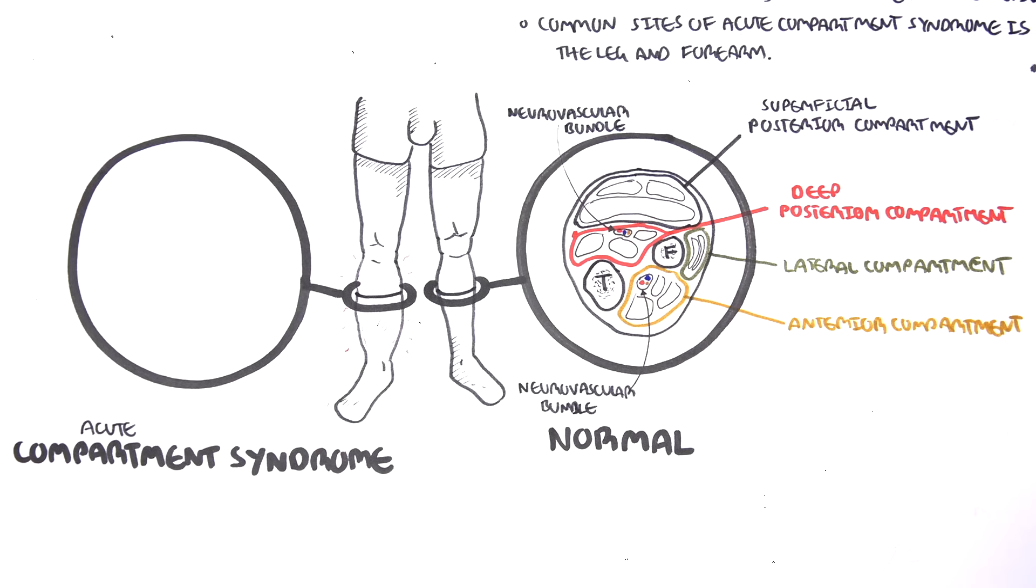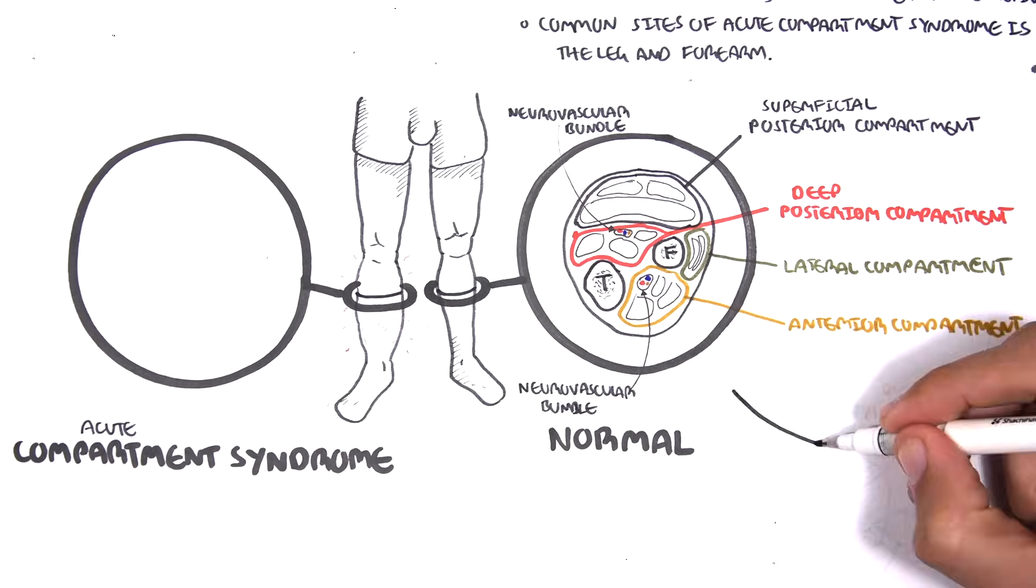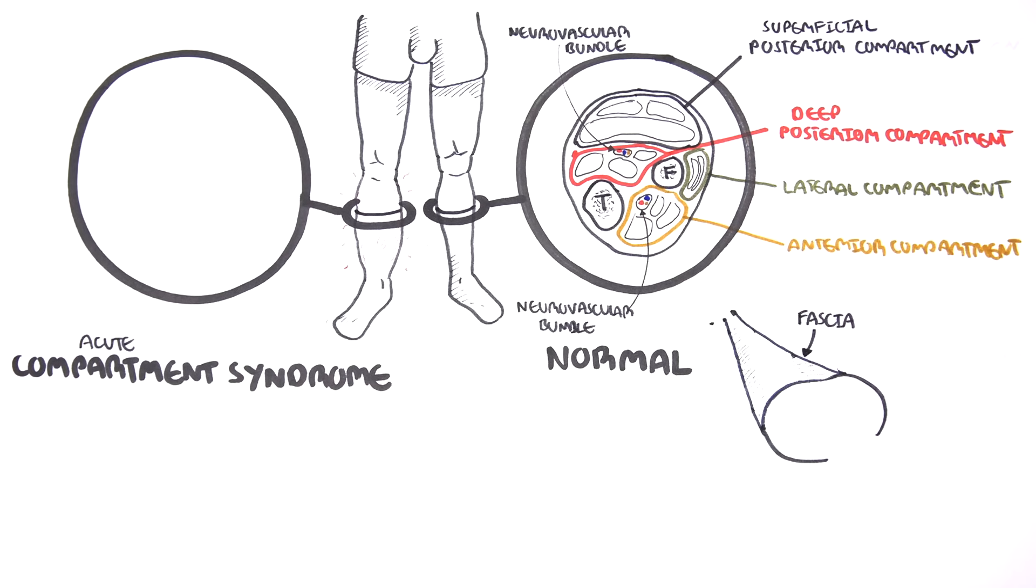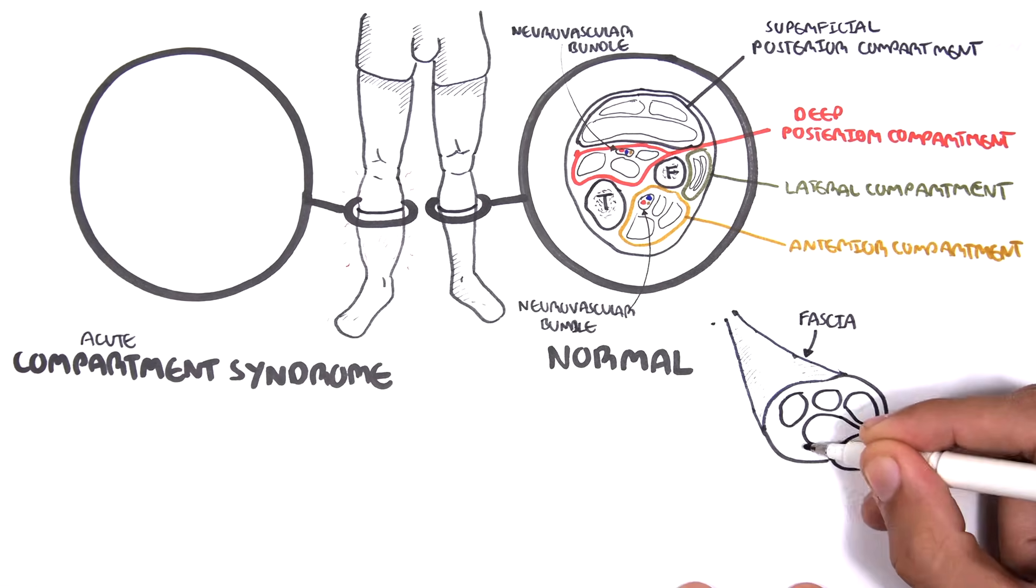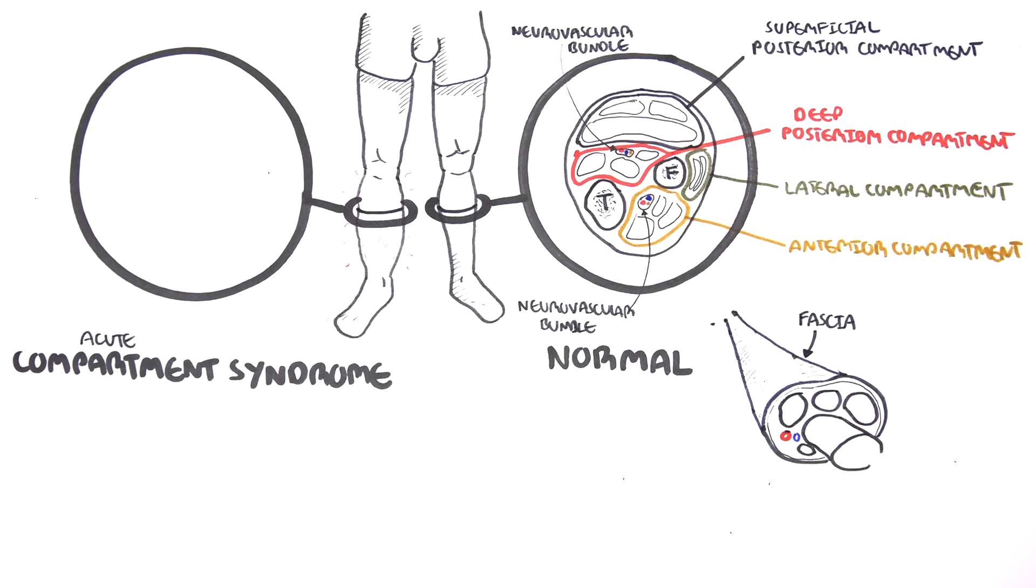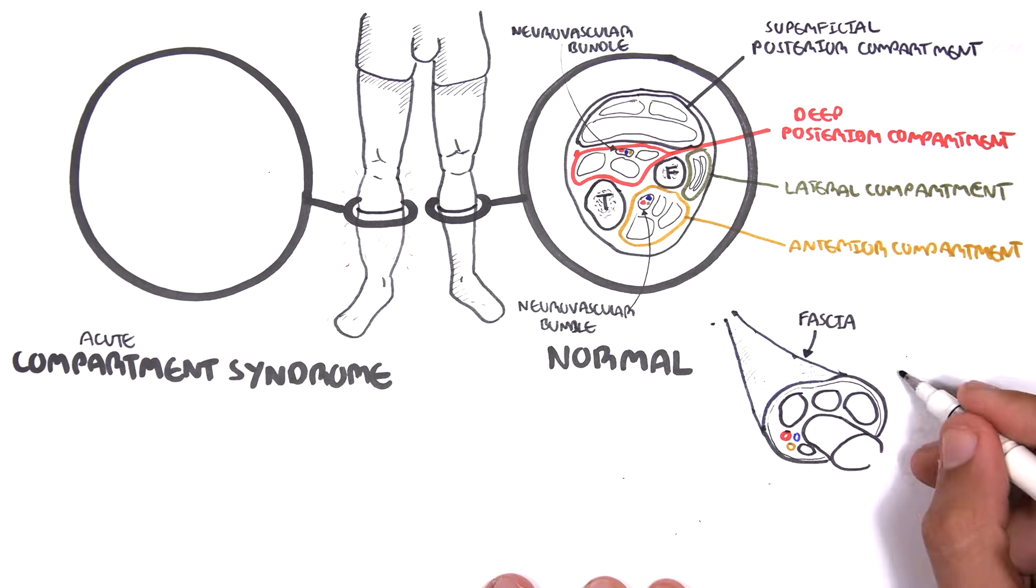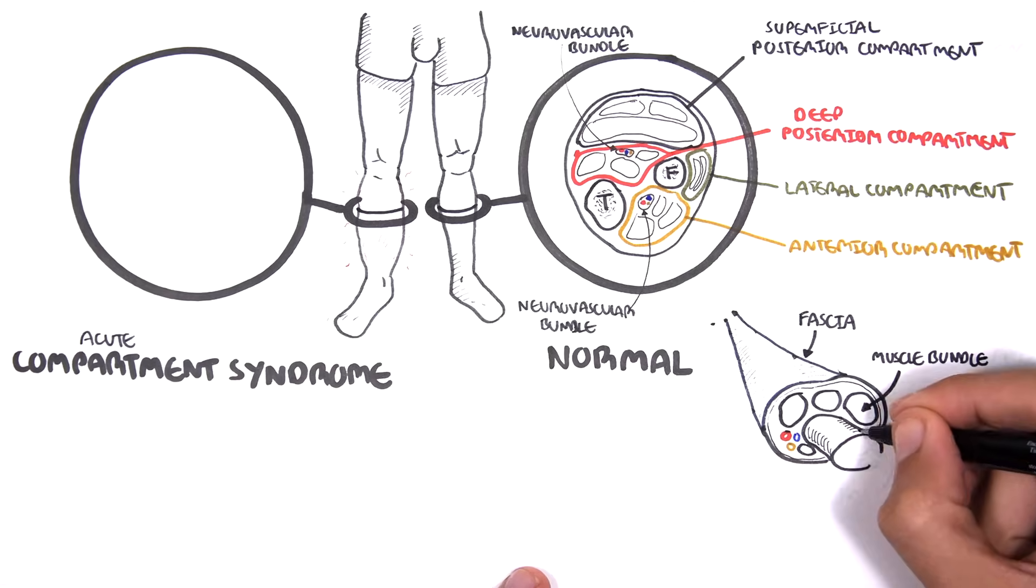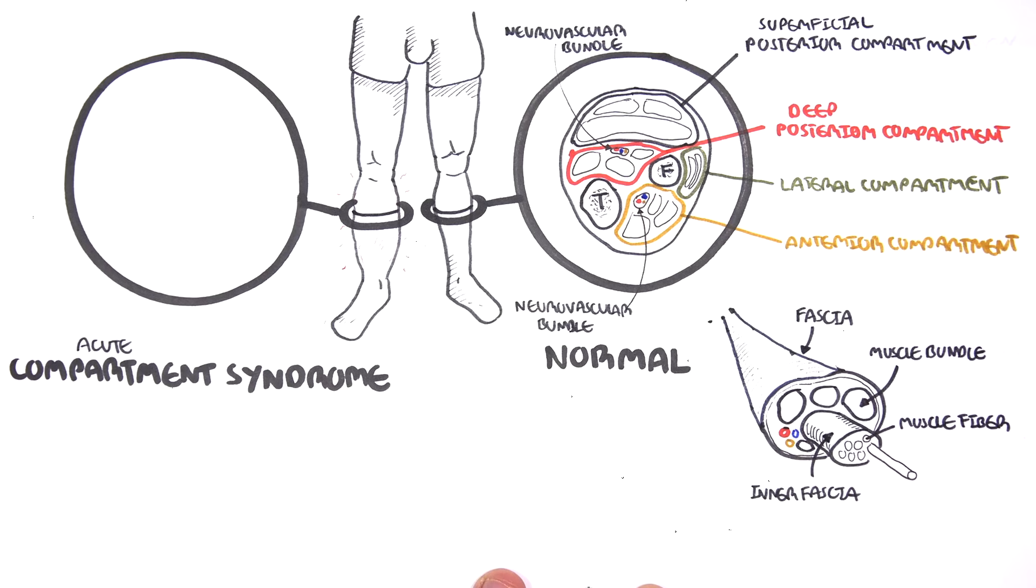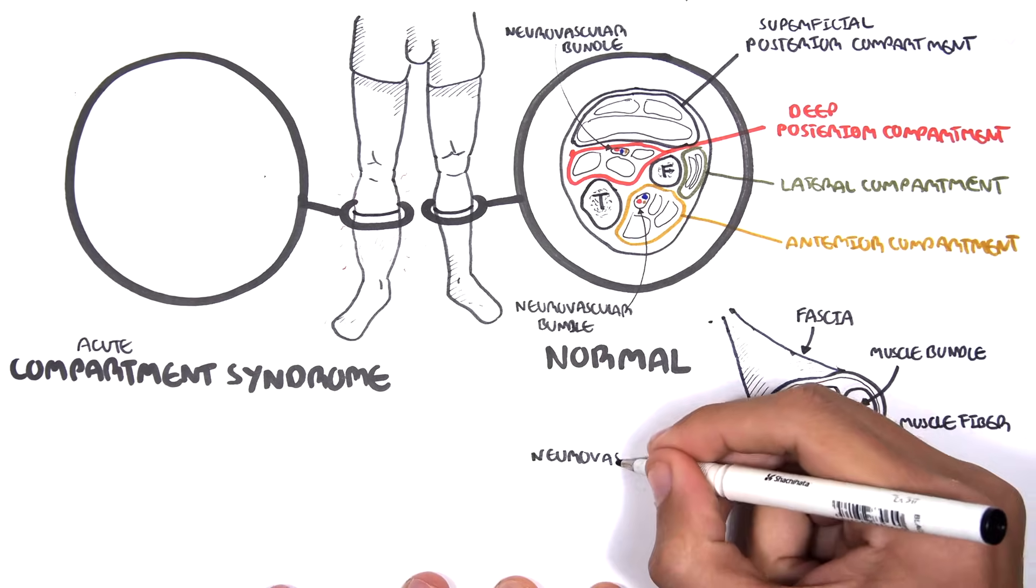Each compartment has a thick fascia around it, but fascia also surrounds each individual muscle. The muscle is made up of smaller units of muscle bundles, which are also surrounded by fascia. Each muscle bundle is made up of even smaller units, called muscle fibers. These are the muscle cells. The muscle altogether is supplied by nerves, arteries, and veins that supply that area.